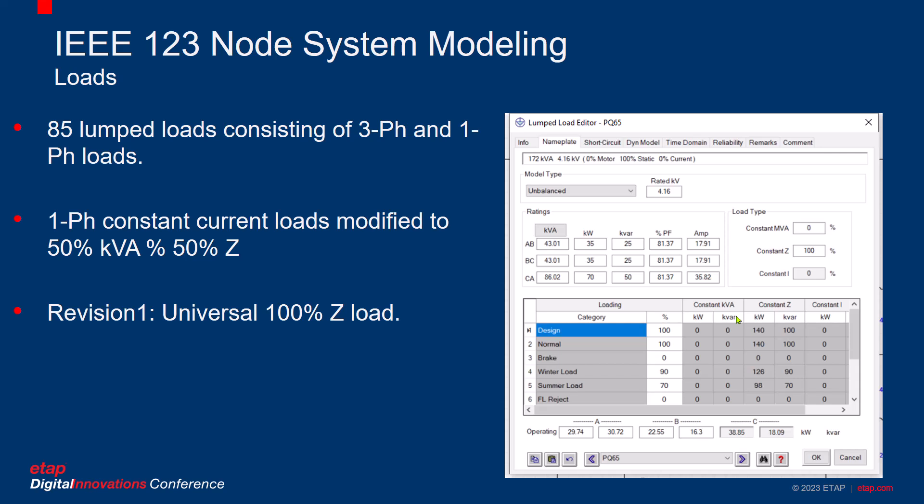There are a total of 85 lumped loads, both single-phase and three-phase, with a mixture of grounding styles and load models such as constant current, constant impedance, and constant kVA. We have modified the constant current single-phase loads to be 50% constant kVA and 50% constant Z due to ETAP modeling restrictions.